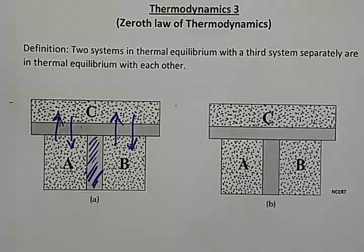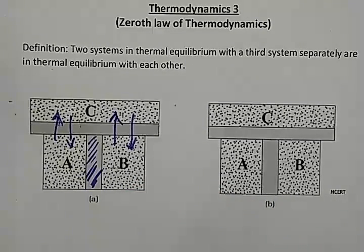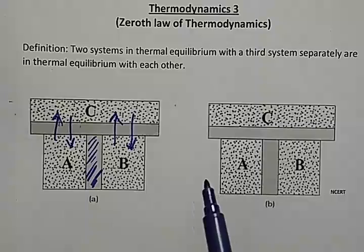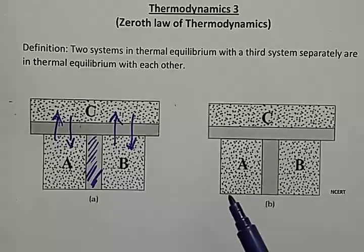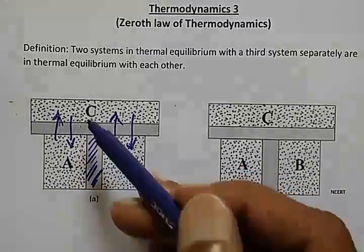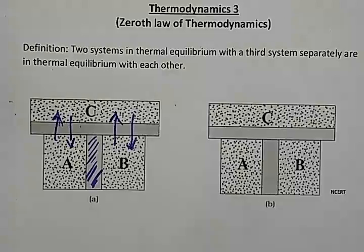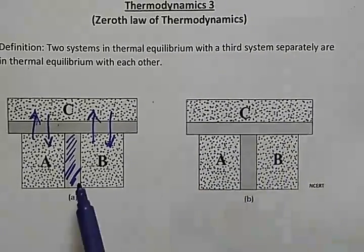We leave the systems for some time. Heat will flow from the higher temperature point to the lower temperature point, trying to reach thermal equilibrium. After some time, B and C will try to become thermally equal — they will reach thermal equilibrium.